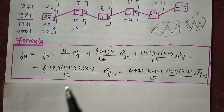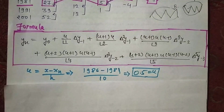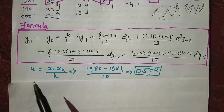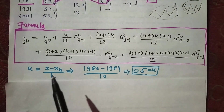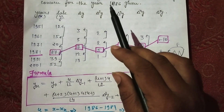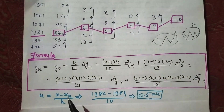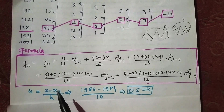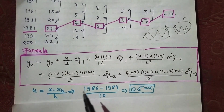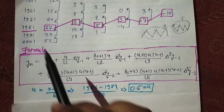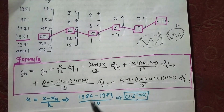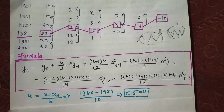So let's see how we find it. You have to find u using the formula: u = (x − xn) / h. What is x? x is given in your question — that is 1986. What is xn? xn is the term you select, which is 1981. That is your xn. And h is the interval, which is the interval between years. If we solve it, u will be 0.5.